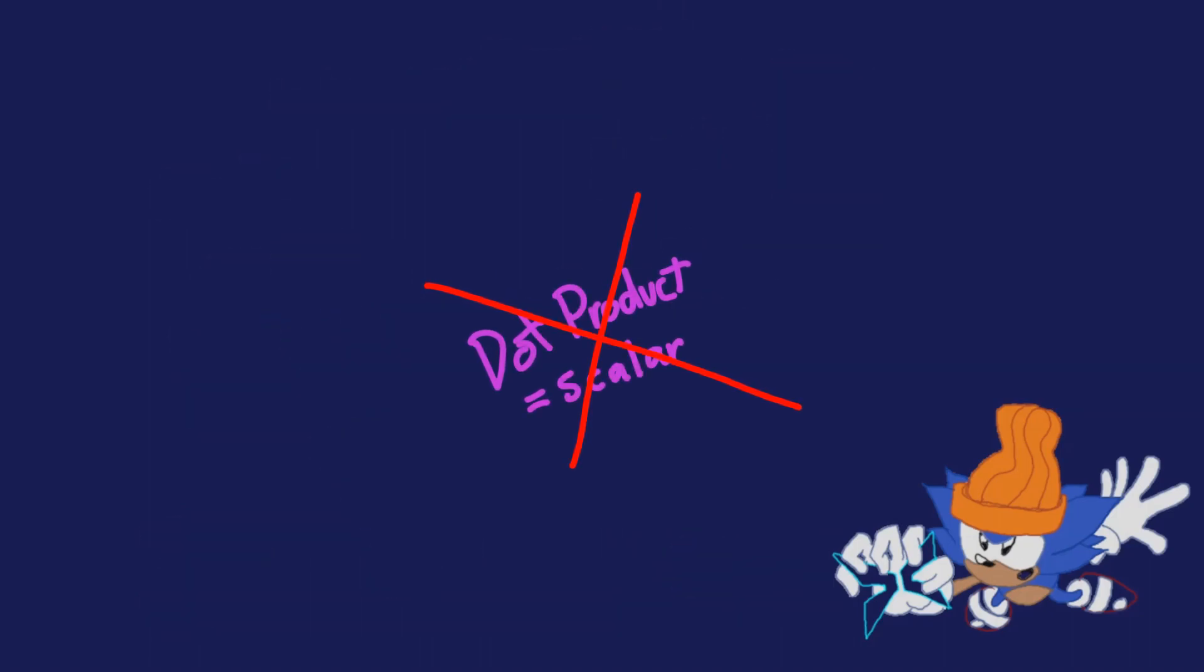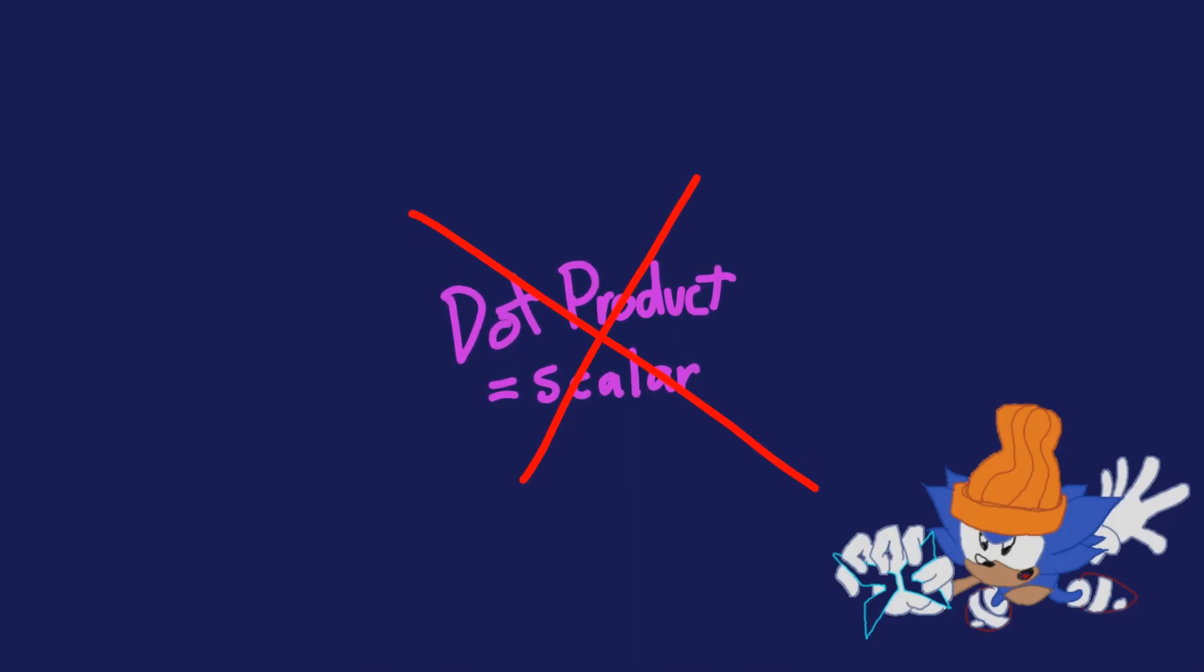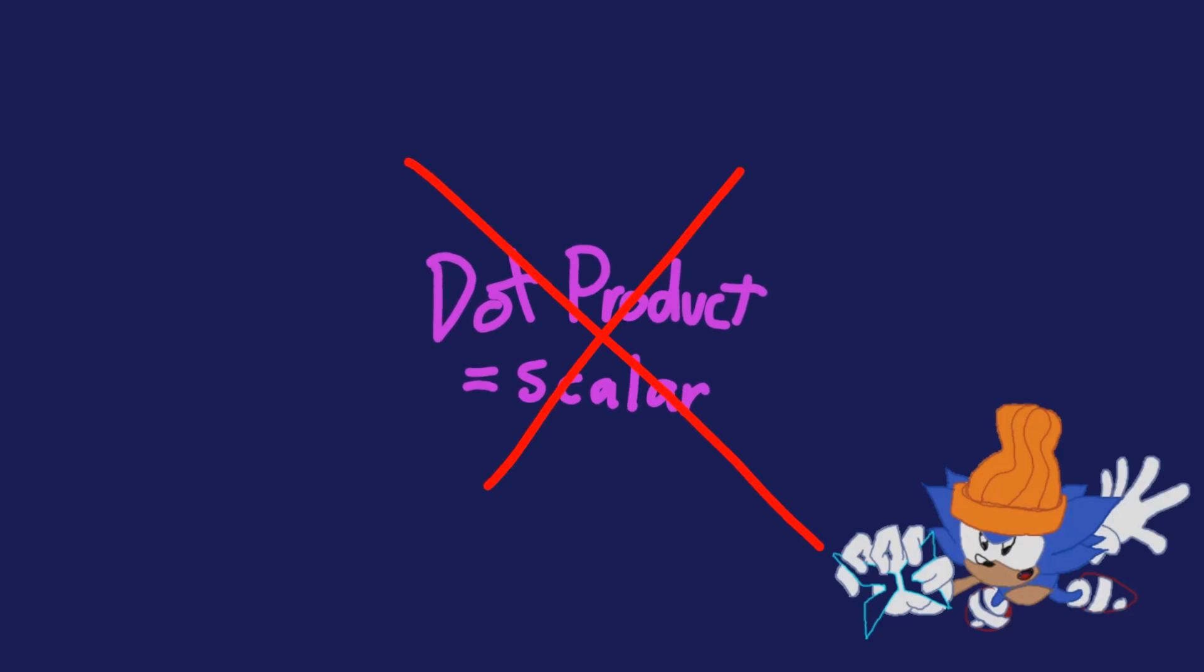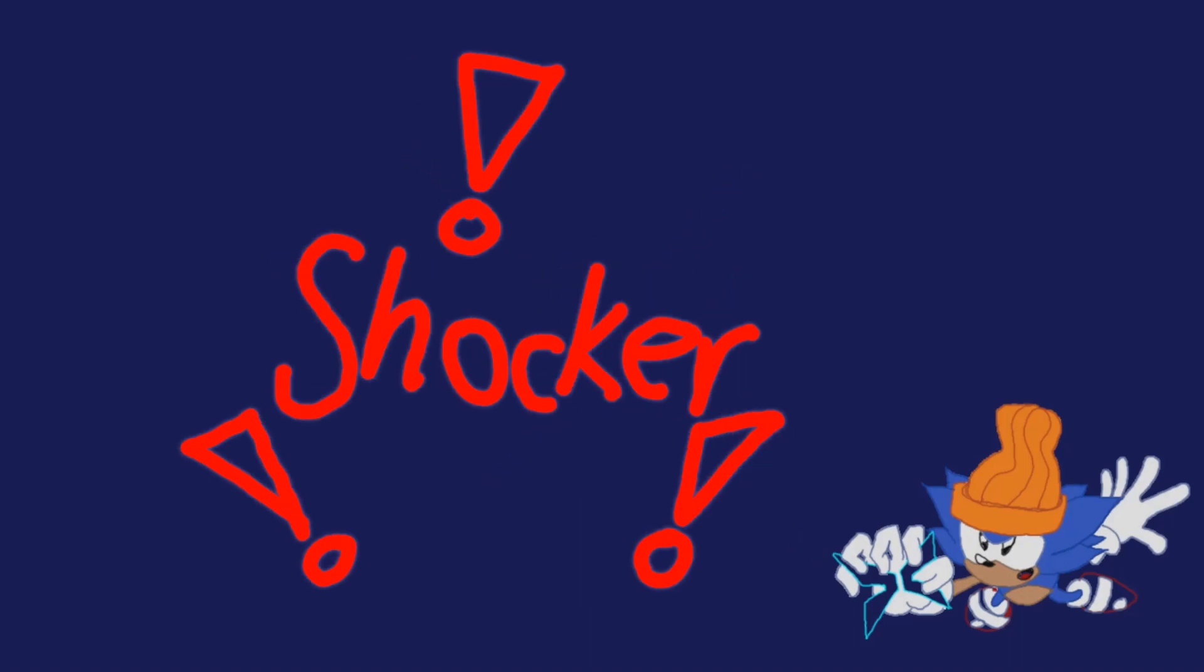Shocker! Dot product results in a scalar result, and requires multiplication. Two things an 8-bit CPU can't do. The range of an 8-bit CPU is minus 128 to plus 127. 256 unique numbers. Also, the 6502 processor doesn't do multiplication or division. Shocker again! Wrapping can't be done with dot product.